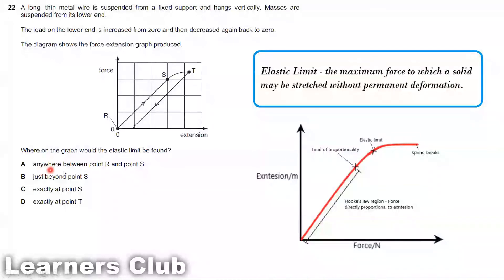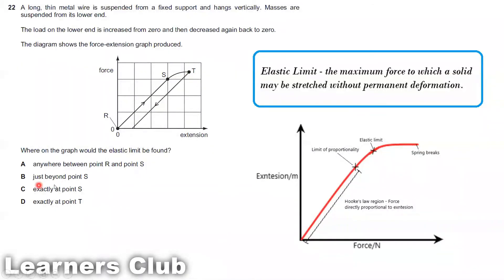Option A — anywhere between points R and S — is incorrect. The elastic limit is just beyond point S, somewhere between S and T. Exactly at point S is the limit of proportionality. After increasing beyond point T and removing the load, the wire returns to a position with a small permanent extension, confirming point T is beyond the elastic limit. So the answer is just beyond point S — option B.